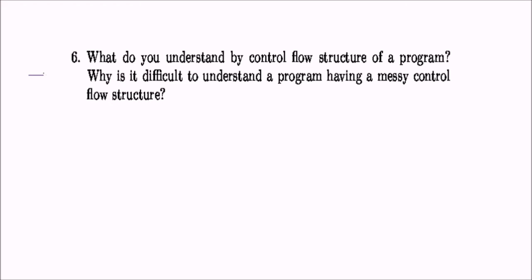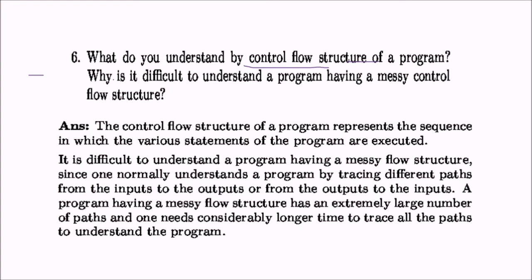Question six asks: what do you understand by the control flow structure of a program, and why is it difficult to understand a program with a messy control flow structure? The control flow structure represents the sequence in which the various statements of a program are executed. It is difficult to understand a messy flow structure because one normally understands a program by tracing different paths from input to output, and a messy structure results in a large number of paths taking a long time to trace.